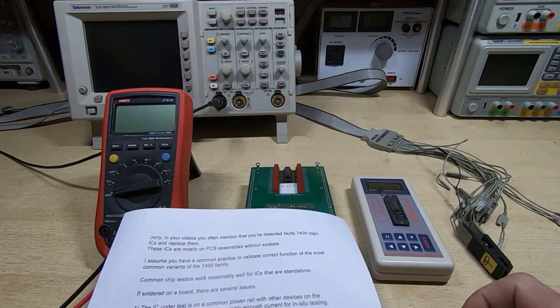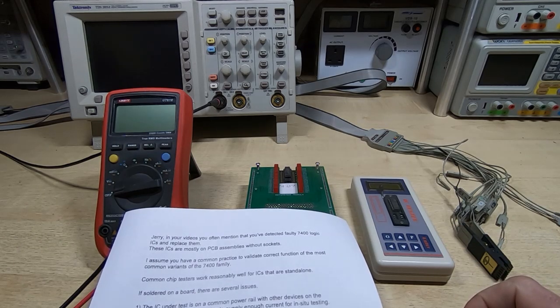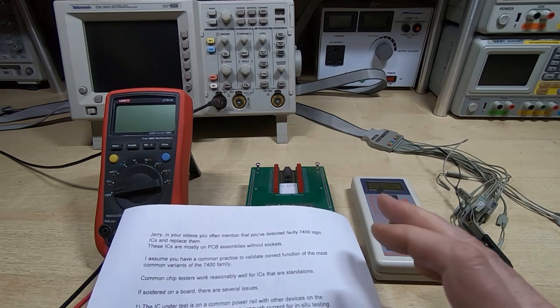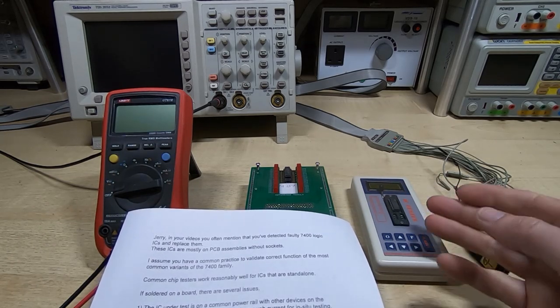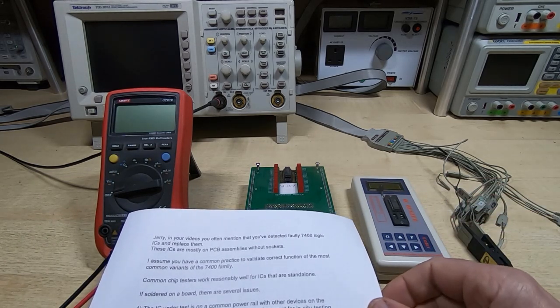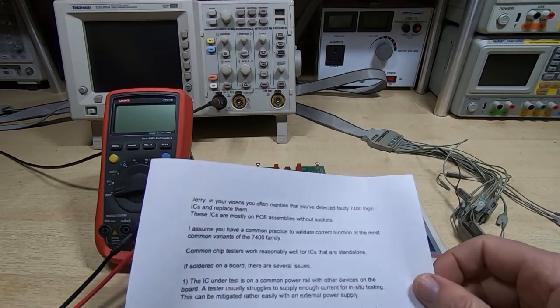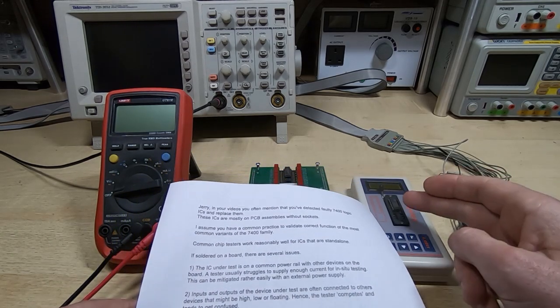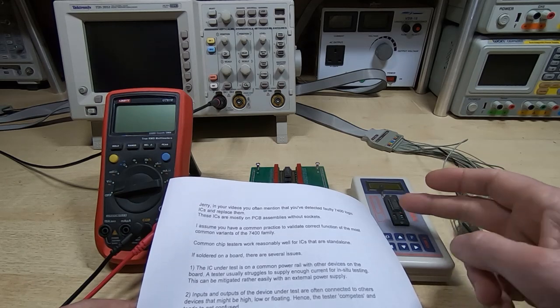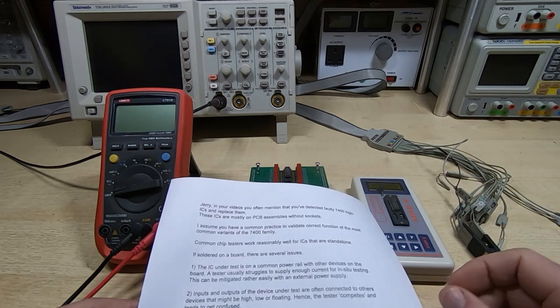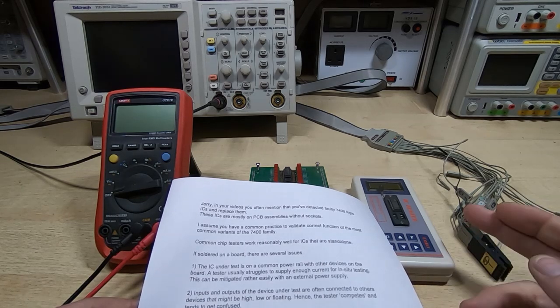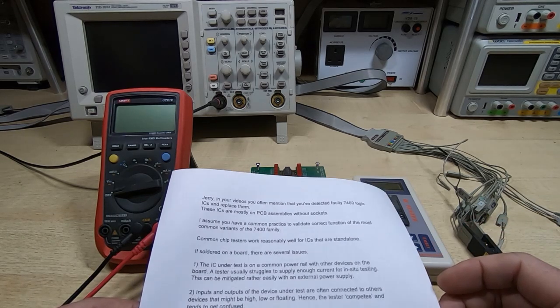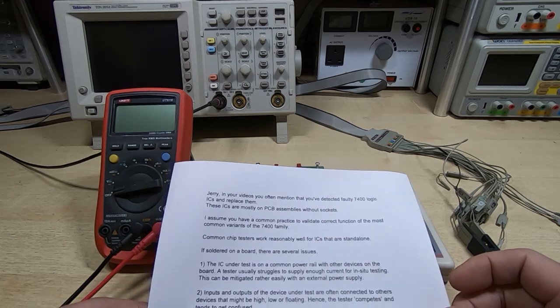So if all the ICs and the board were in sockets and you remove them, put them into a tester, they might all test fine. Even though one of them is actually the culprit and the cause of the system not running. So you've got to be fairly cautious when you're testing, especially 74 series systems.